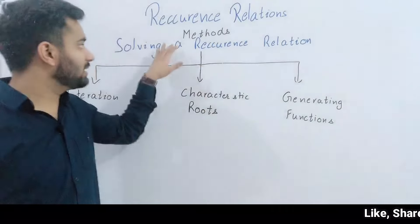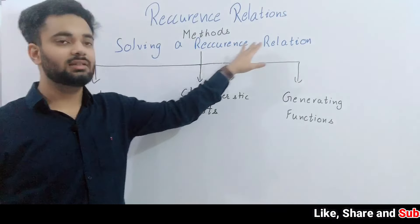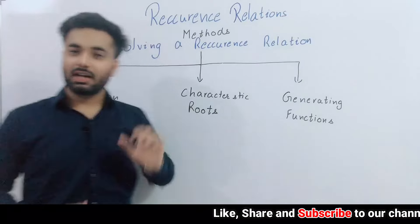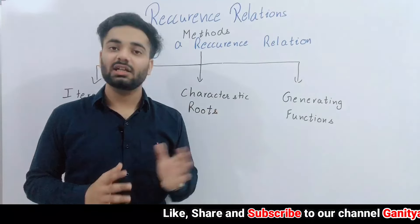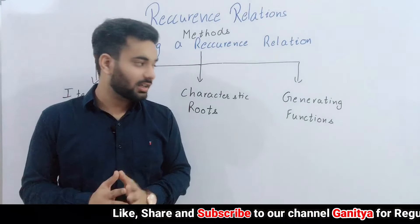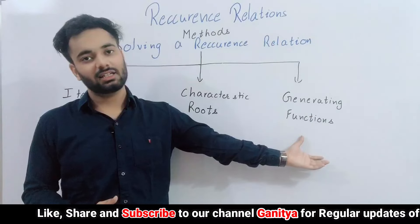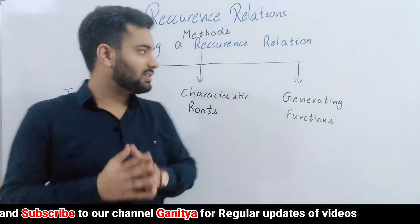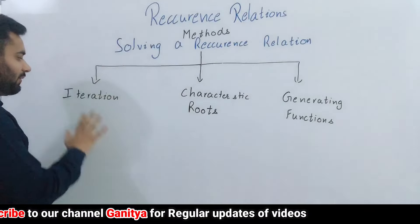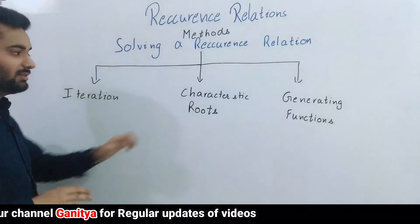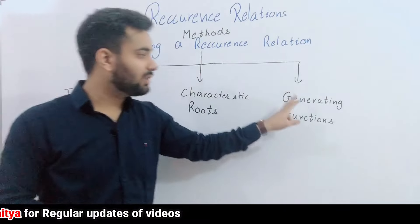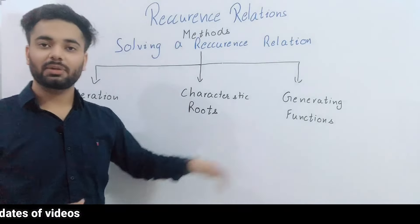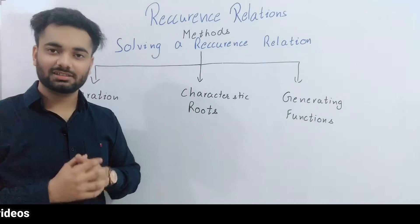Next topic is methods of solving a recurrence relation. Solving means: given any recurrence relation, we will express it in closed form — that is called the solution of a recurrence relation. There are three methods: first is the iteration method, second is the characteristic root method, and third is by using generating functions. We will discuss all three methods one by one in our next videos.